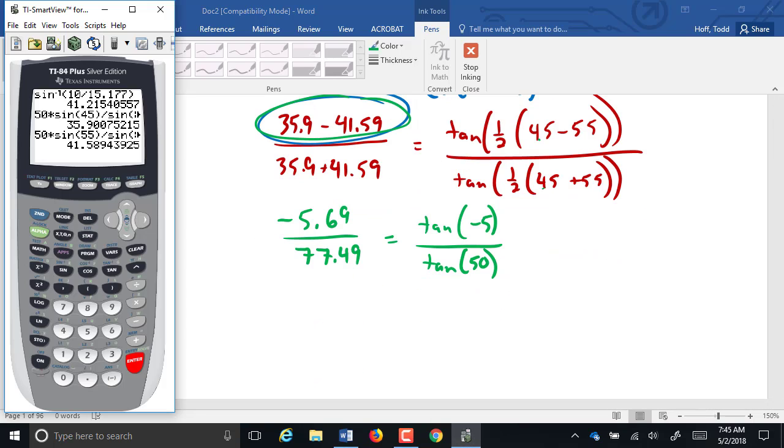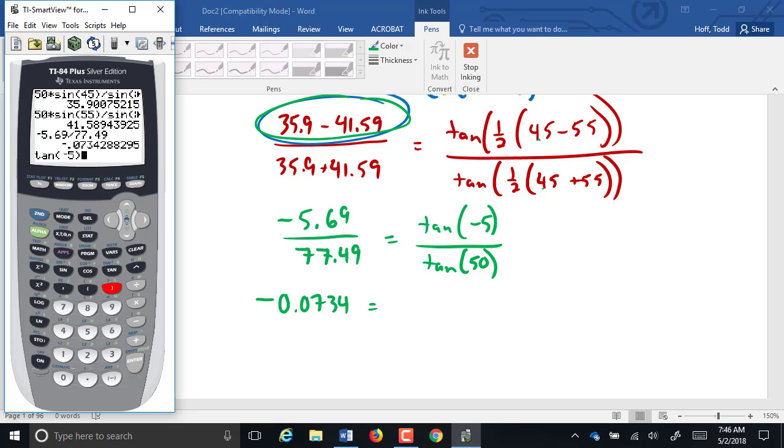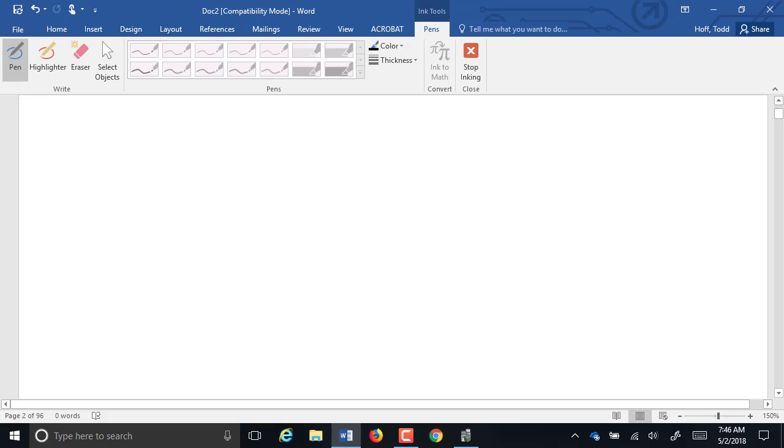Let's see if this holds true. Negative 5.69 divided by 77.49 equals negative 0.0734. On the other side, the tangent of negative 5 divided by the tangent of 50 equals negative 0.0734. Well, where would this possibly be used?